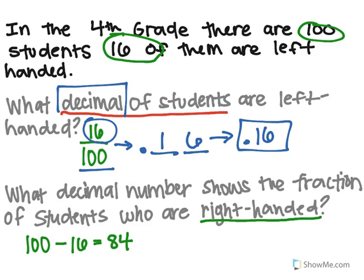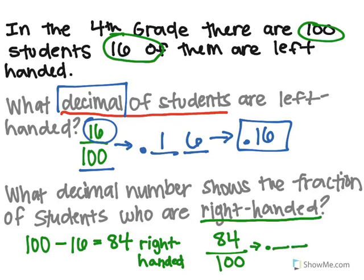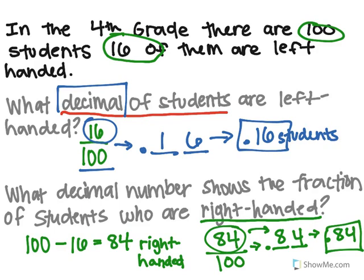So there are 84 students that are right-handed. Can we now create this into a fraction? Yes, so we do 84 over 100, because there's 84 students out of 100 students that are right-handed. I can now turn this into a decimal. I know I'm in the hundredths place, so I go tenths, hundredths, take these digits and write them on top from the numerator. And now I have my decimal, 84 hundredths. And even better is if you write out the units.